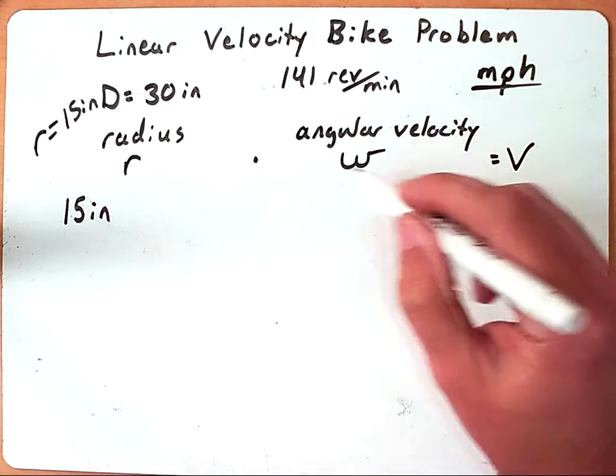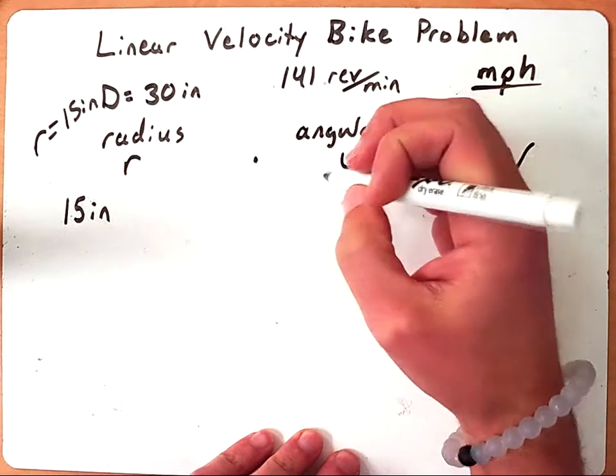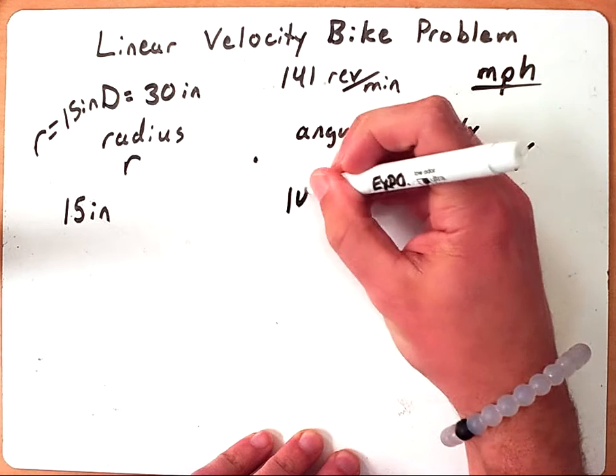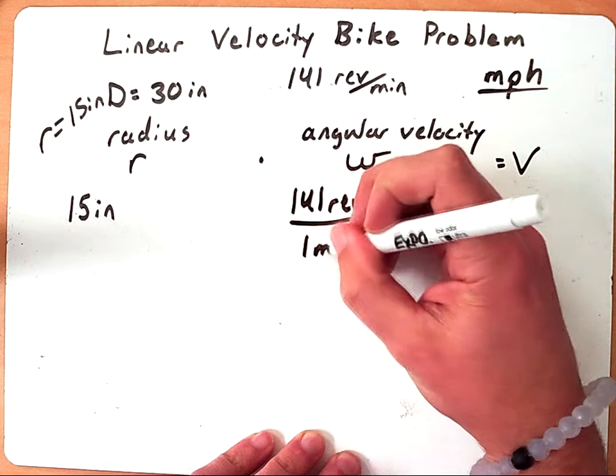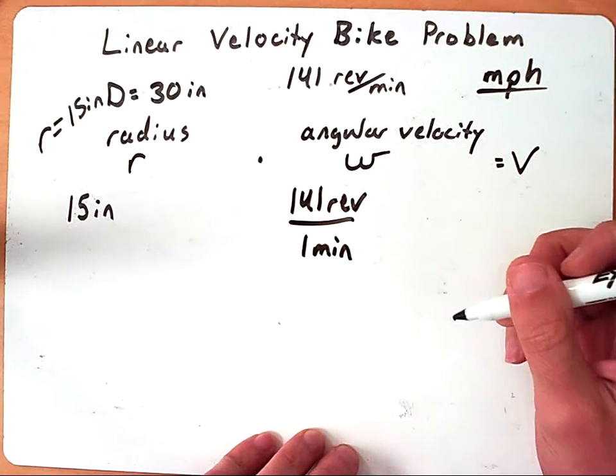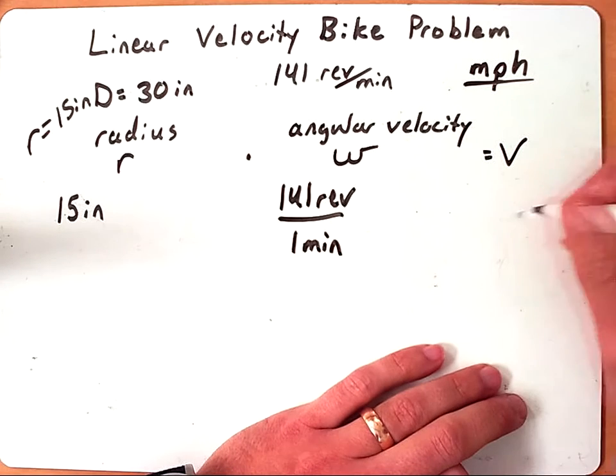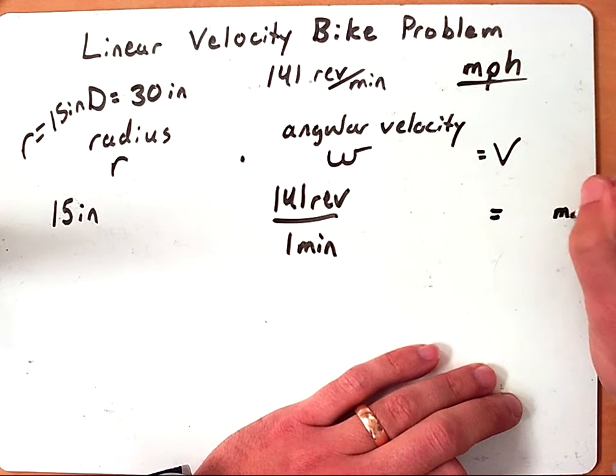We do not know the angular velocity currently, but we do know 141 revolutions per minute, which is almost the angular velocity, so I'm going to go ahead and fill that in. 141 revolutions in one minute. And then we don't know our final answer, but we do know that they want it to be in miles per hour.